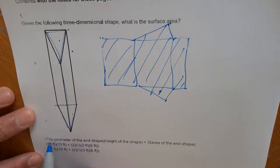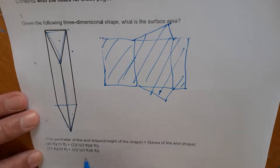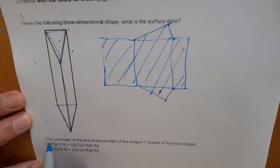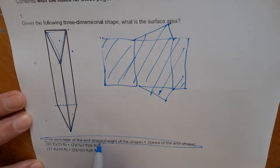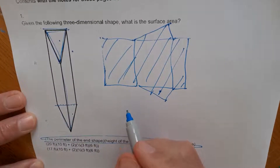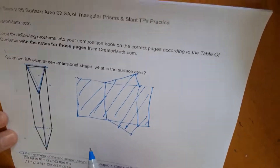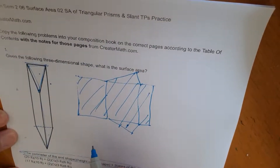Interestingly enough, the surface area is the perimeter of the shape times the length plus two times the area of the end shape. So here's our answer — the perimeter of the end shape. The end shape is a triangle. How do you figure out the perimeter of the triangle? You just go around and figure out the length of this thing. It's my cat jumping up on the table.